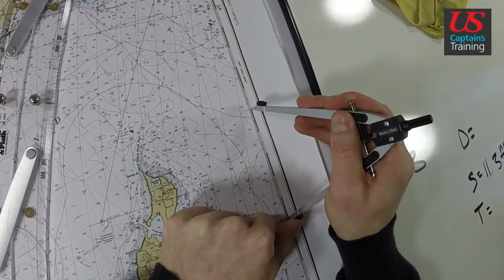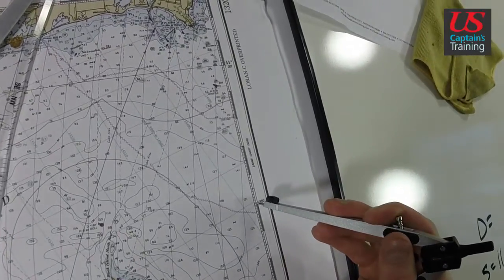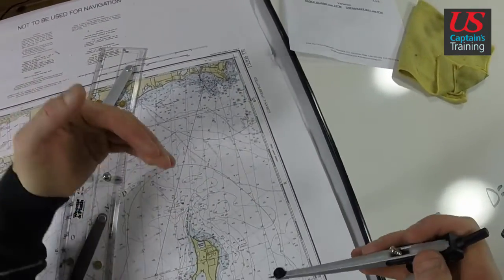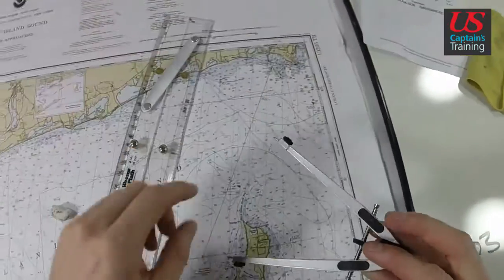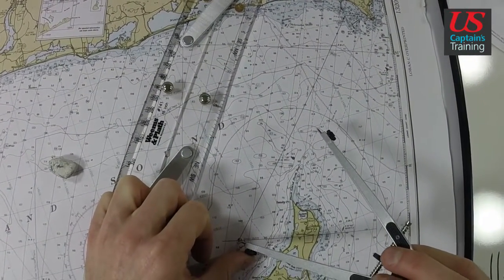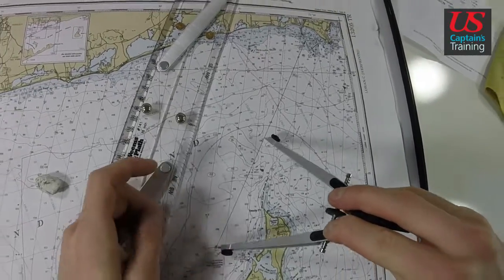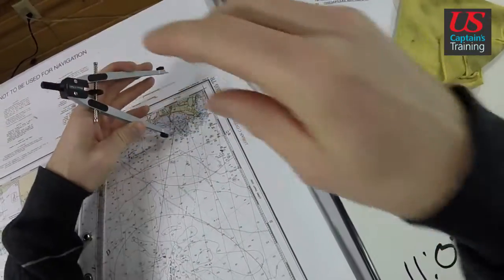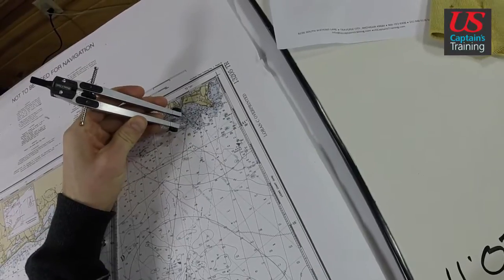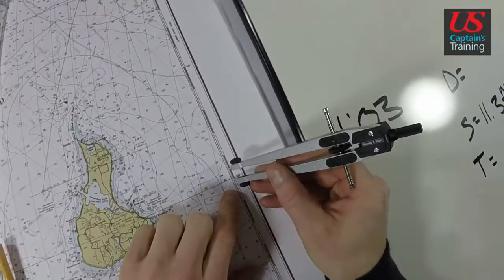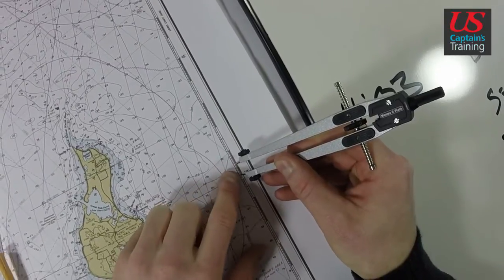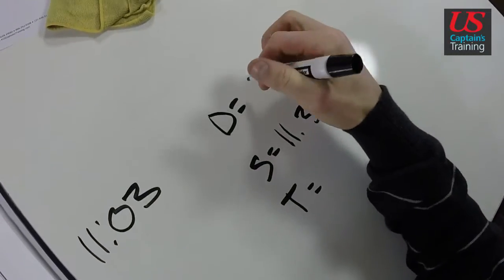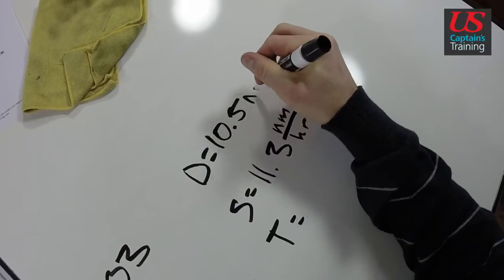I'll get five on my parallel rules. Make this accurate because if you're inaccurate here, it's going to put that inaccuracy every time you walk this up the line — it'll multiply. Five, ten — now there's a little left over. Let's measure that: ten plus this little bit, ten plus 0.5, so ten point five. Our distance is 10.5 nautical miles.